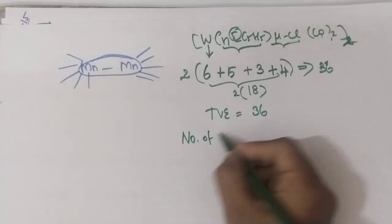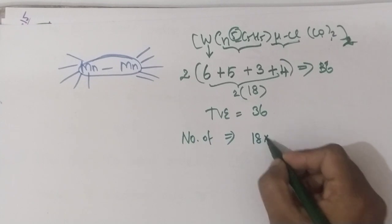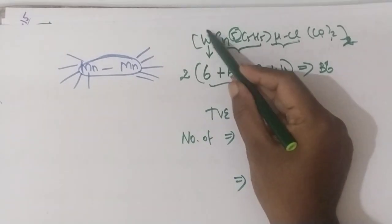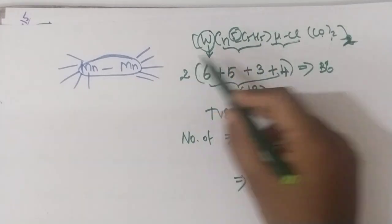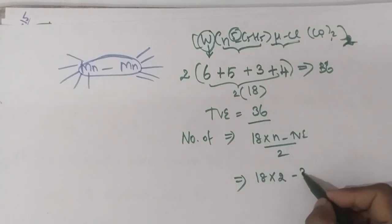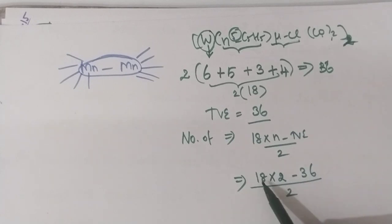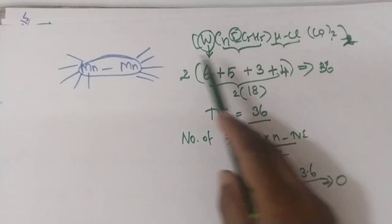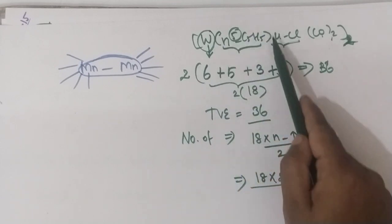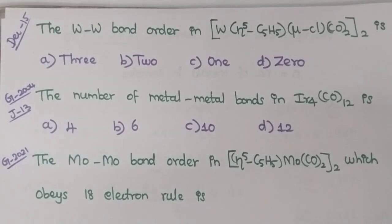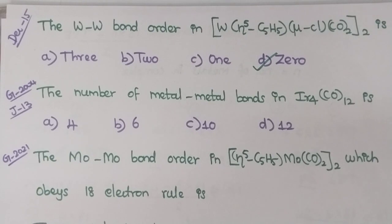Total valence electron = 36. To find number of metal-metal bonds: (18 × N − TVE) / 2. The complex is given as twice, meaning 2 tungsten atoms, so N = 2. Therefore: (18 × 2 − 36) / 2 = (36 − 36) / 2 = 0. The number of metal-metal bonds in [W(η⁵-C₅H₅)(μ-Cl)(CO)₂]₂ is 0 — no metal-metal bonds are present. Hence, option D is the right answer.